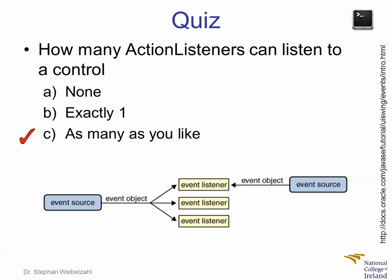But actually, it also works the other way around. We can also, as shown in this diagram here, register several different event listeners with the same event source. So there could be this one button, but there could be 5 different event listeners listening to it. And whenever the button is clicked, all of them may receive this action event, and the callback method action performed in those objects is actually triggered. This can be quite useful in separating out different concerns — we could have some front-end handling in one event listener, while the same event triggers background processes in another class, in a different event listener.